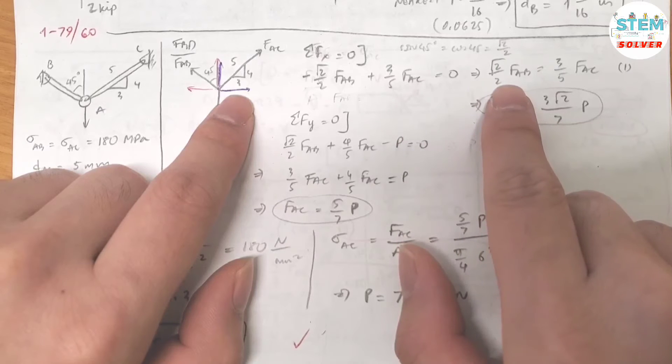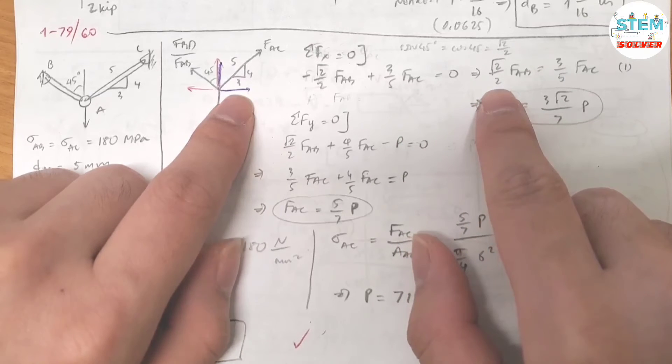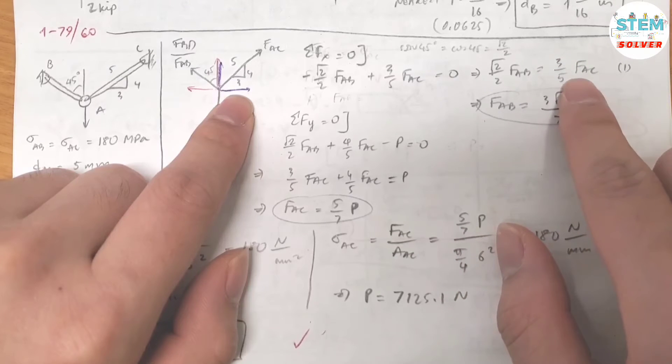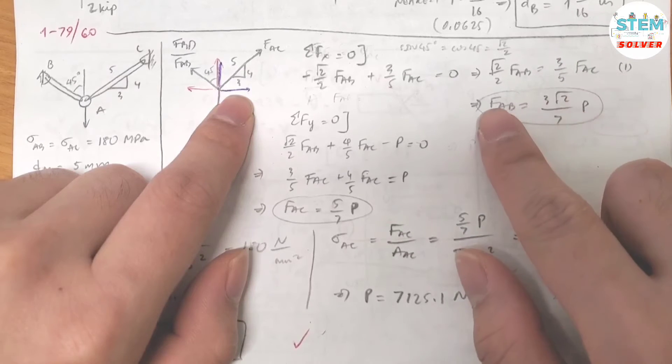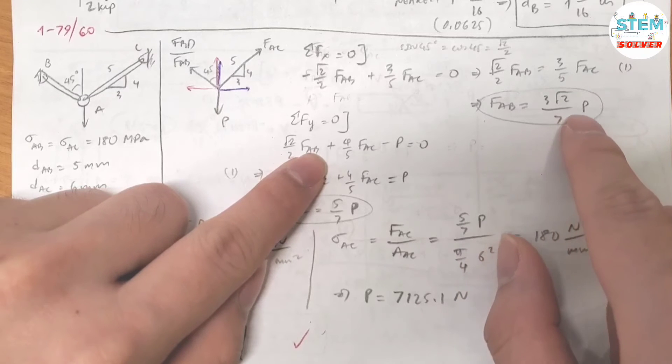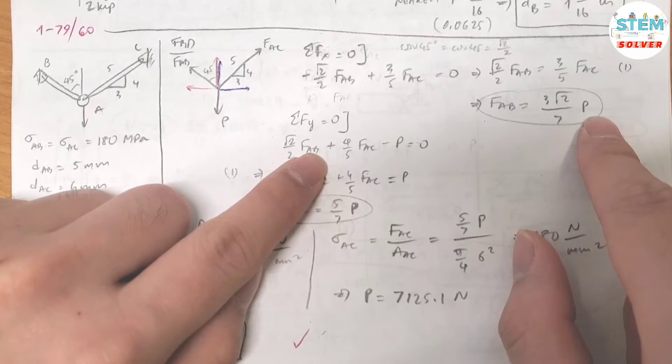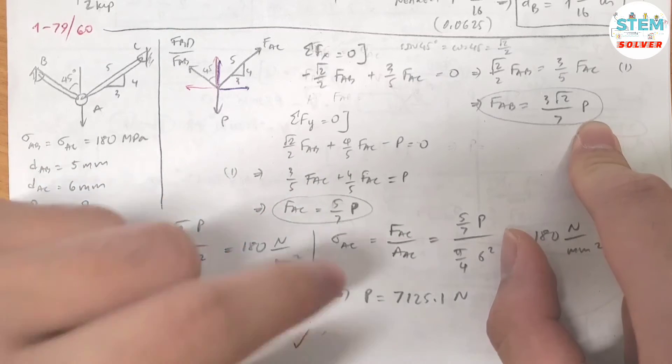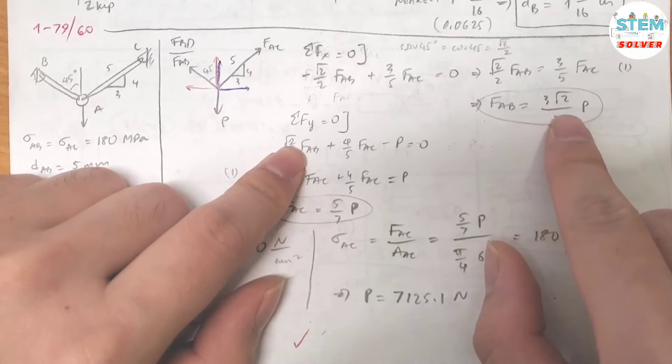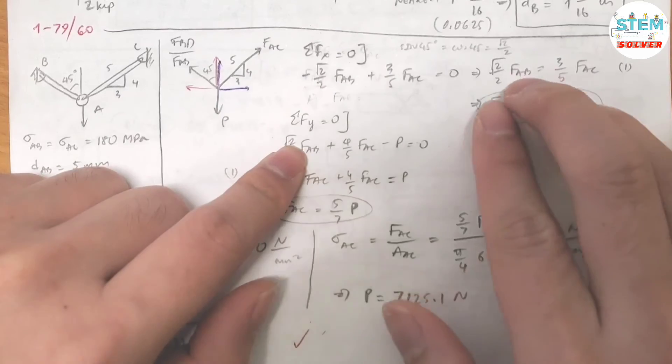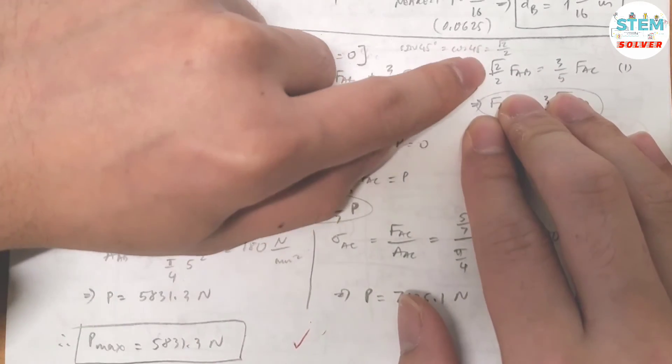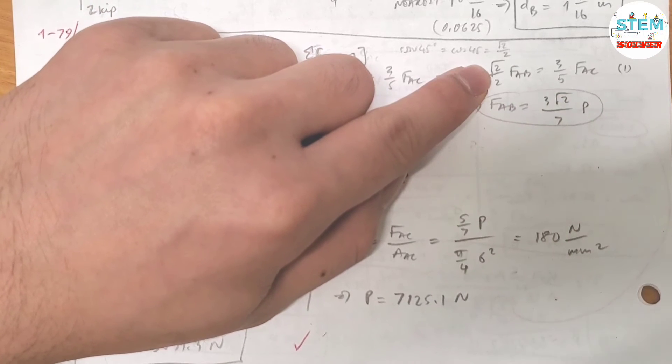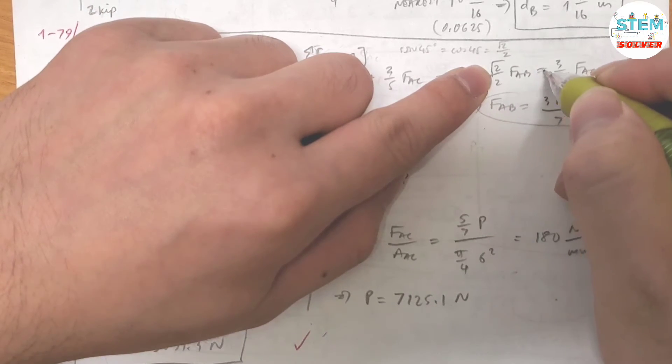Then you figure out the equation: square root of 2 over 2 FAB equals 3 over 5 FAC. Or I can solve for FAB equals 3 square root of 2 over 7 P. No, no, no, you cannot do this one at this point. Just ignore this first. You have this equation. Forget about this and keep in mind that you have this equation, this equality.